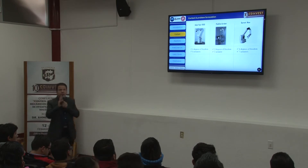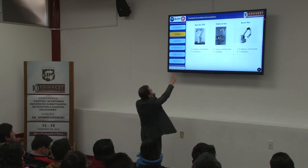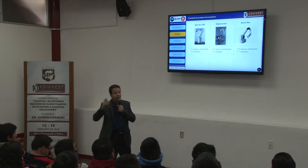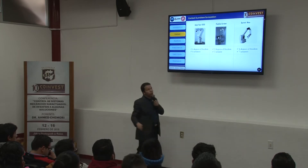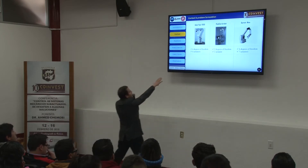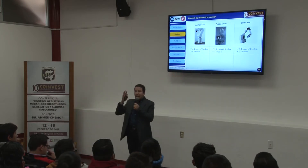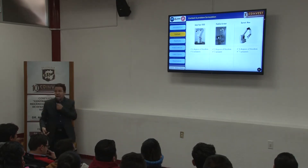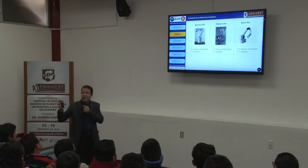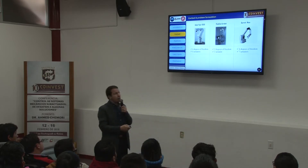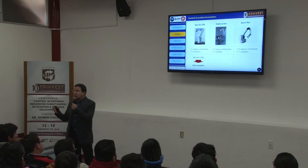Let me show three examples. The first is a manipulator with six degrees of freedom — six rotational joints, each equipped with an actuator, one motor per joint. If the number of degrees of freedom equals the number of control inputs or actuators, we say the robot or system is fully actuated.